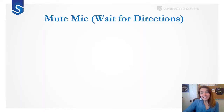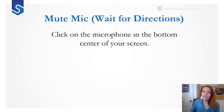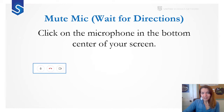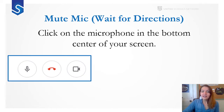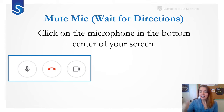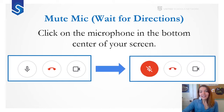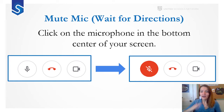I mentioned that you'll need to mute your microphone. You can do this by clicking on the microphone in the bottom center of your screen. There'll be a mic, an end button, and a video button. You want to toggle so that the mic is red — that means it's off.